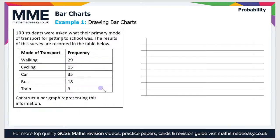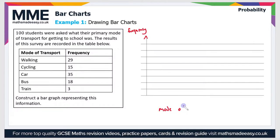To construct a bar graph we usually plot frequency on the y-axis, so let's label that first. So frequency there. And then that means that the x-axis will be mode of transport.